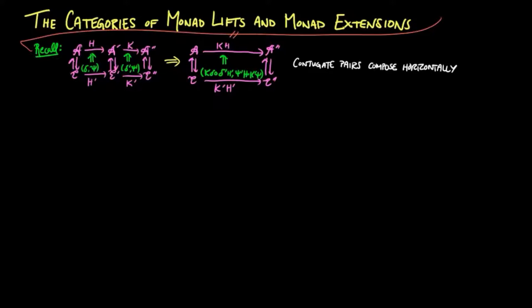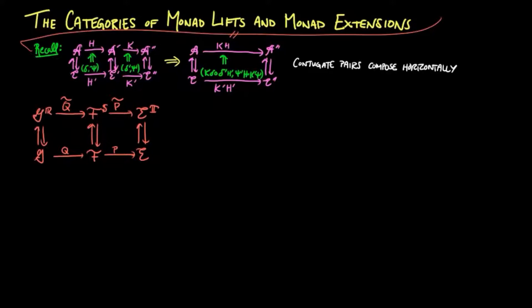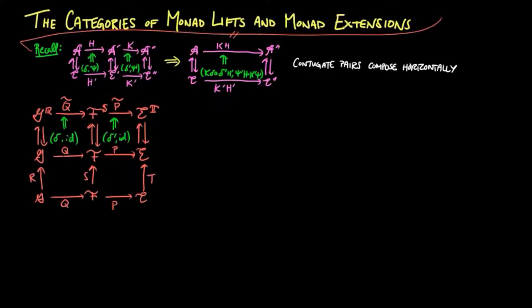We then use this result to define composition in a category of monad lifts. So if the top squares are Eilenberg-Moore lifts of q and p through ur-us and us-ut, respectively, with delta and delta-prime as the left mates of the identity natural transformations, then by definition, lambda is equal to us-delta and gamma is equal to ut-delta-prime as the corresponding natural transformations to the lifts above them.